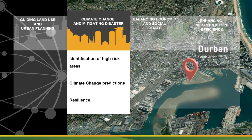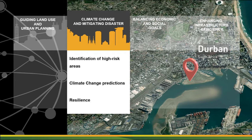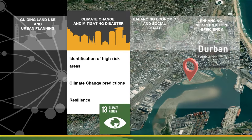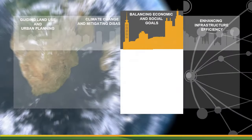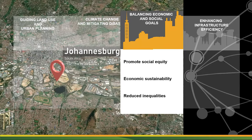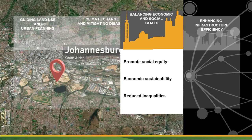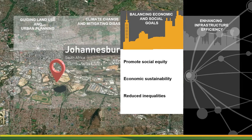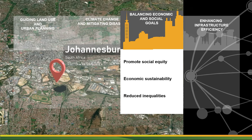Integrating climate change adaptation, the NSDF incorporates projections of climate change impacts, such as sea level rise or increased frequency of extreme weather events, ensuring future development is resilient. This relates to SDG 13, climate action. Balancing economic and social goals, the NSDF helps promote social equity and economic sustainability by guiding development towards areas of economic opportunity and away from areas of high social vulnerability. This aligns with SDG 10, reduced inequalities.